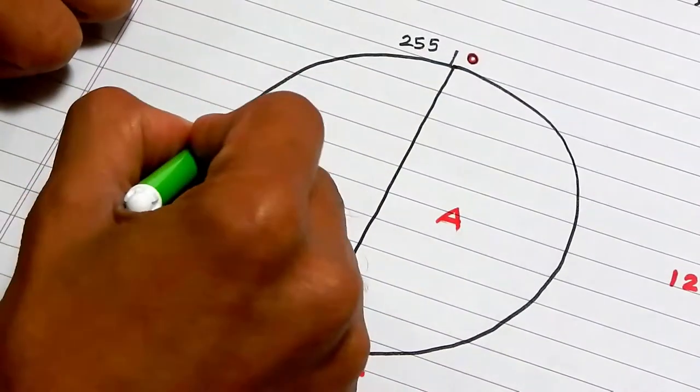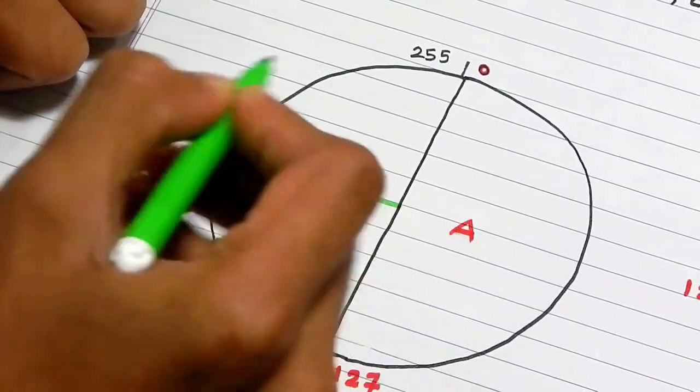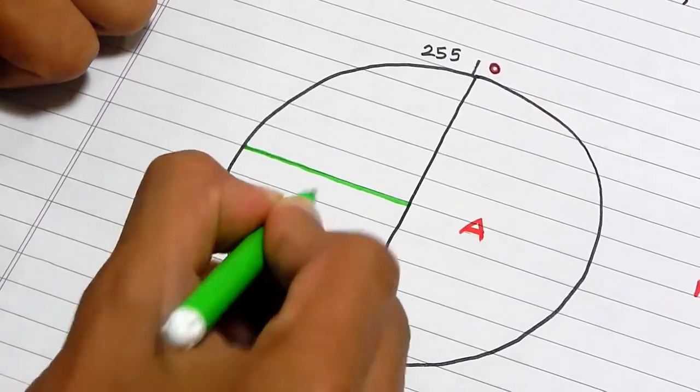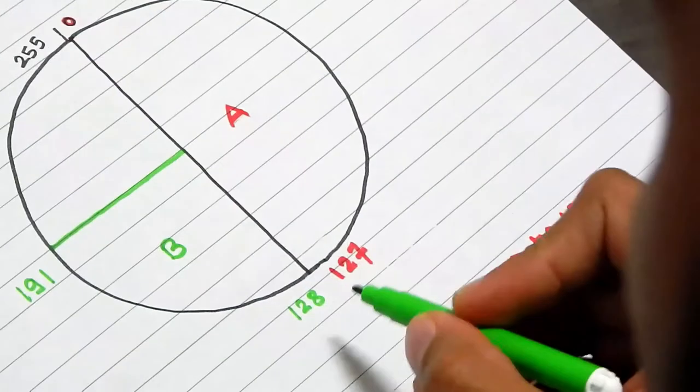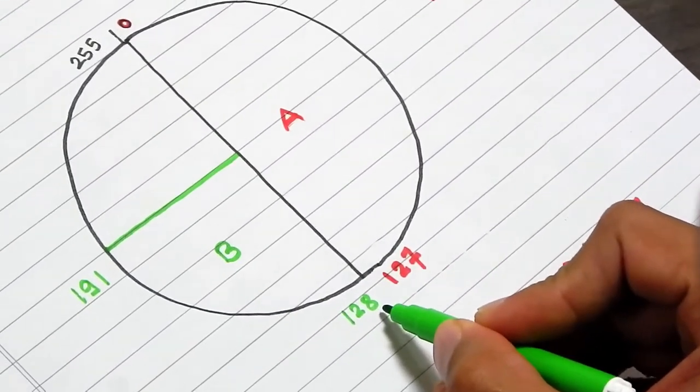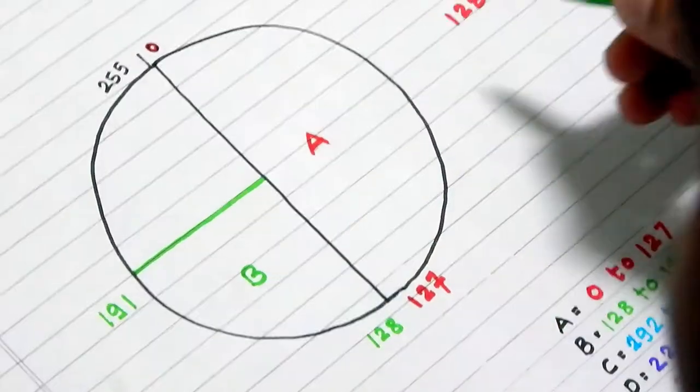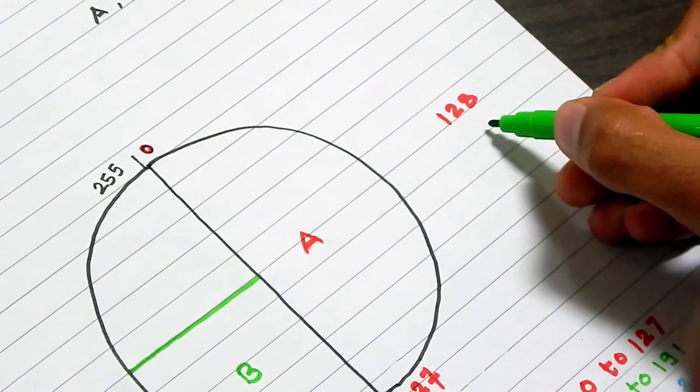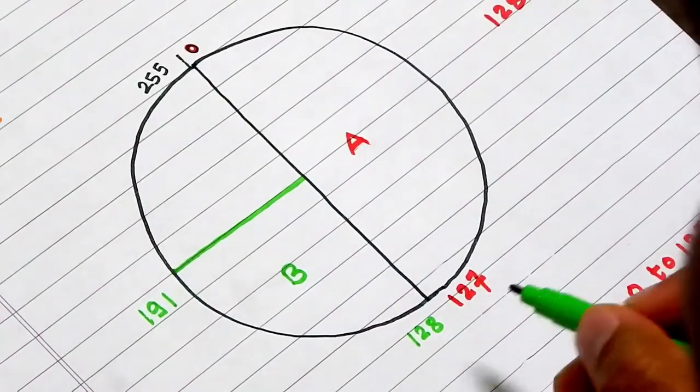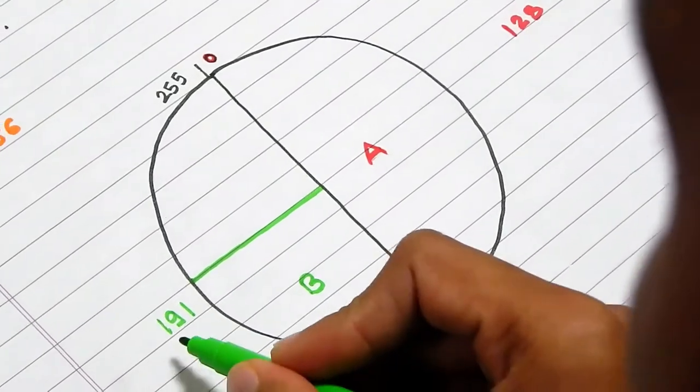Now, we will divide this half circle into further parts. This will become class B. The starting address of the class B is 128. For ending address, we will divide 128 divided by 2 that is 64. We will add the 64 in 127 that is 191.